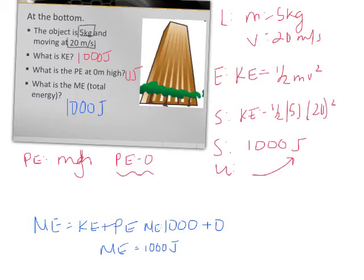So we're seeing that ME stays the same. You're also seeing, and a general assumption you can make here, is at the bottom, ME equals KE because PE is equal to zero.